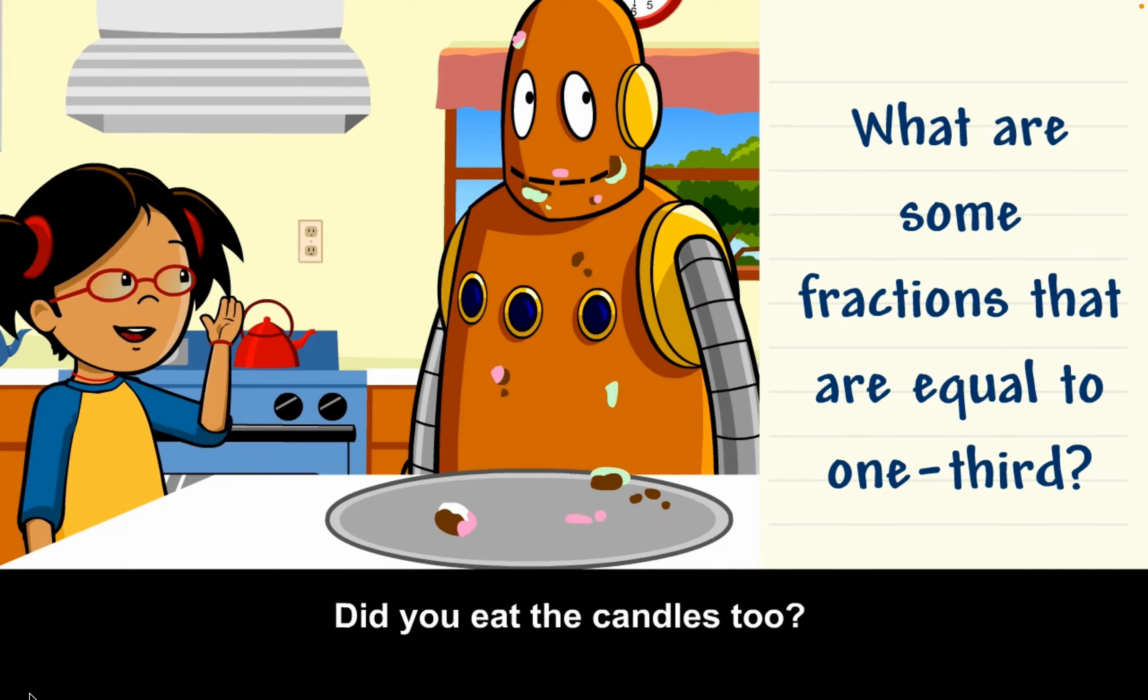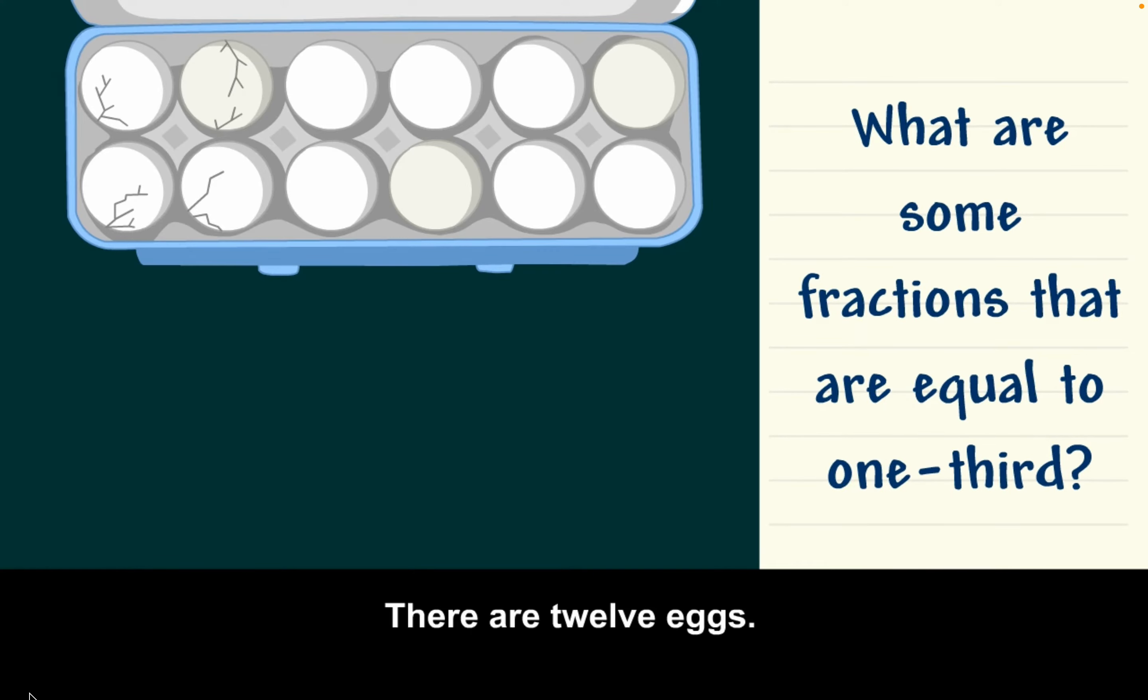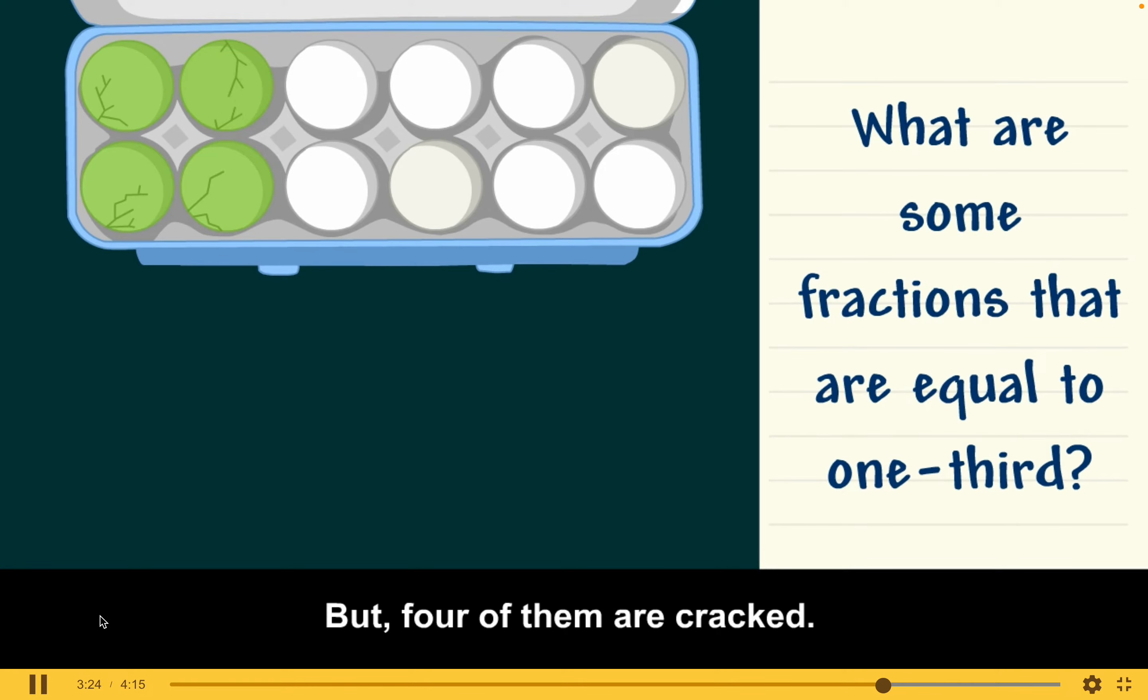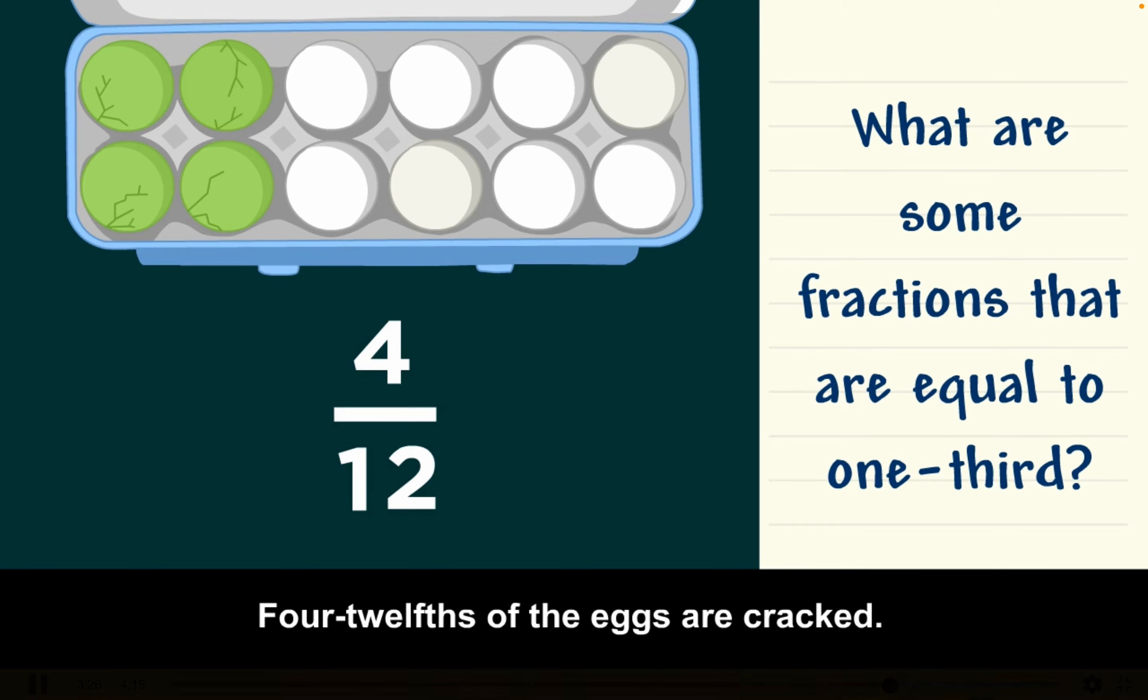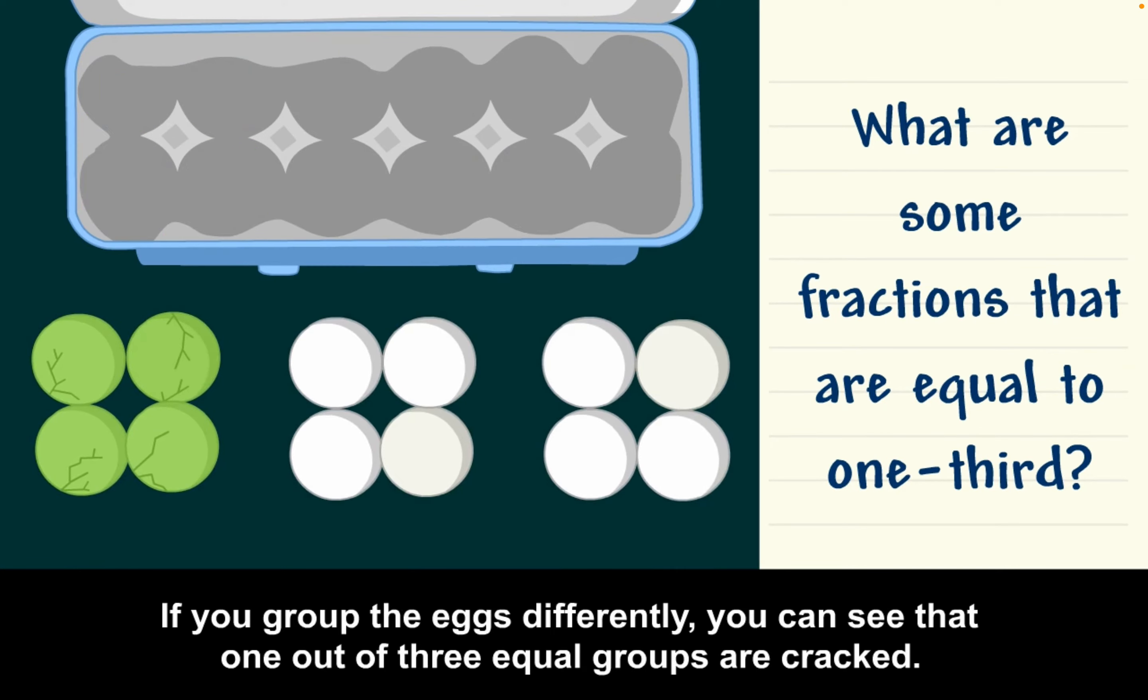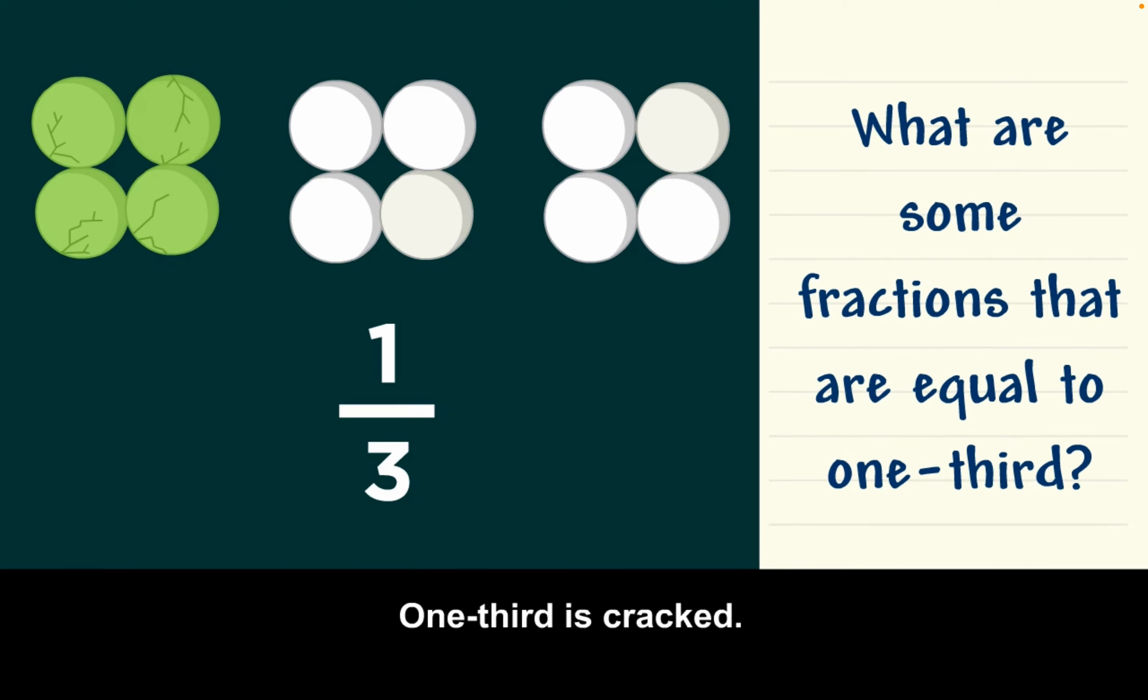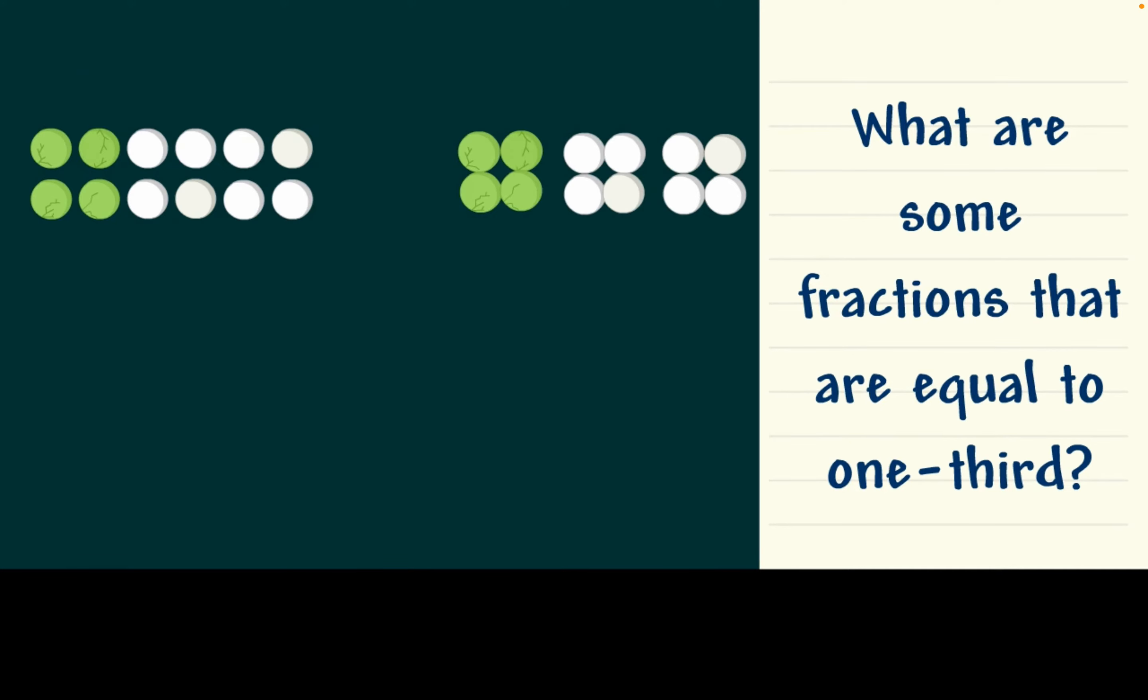Did you eat the candles, too? There are twelve eggs, but four of them are cracked. Four-twelfths of the eggs are cracked. If you group the eggs differently, you can see that one out of three equal groups are cracked. One-third is cracked. So, four-twelfths is equal to one-third.